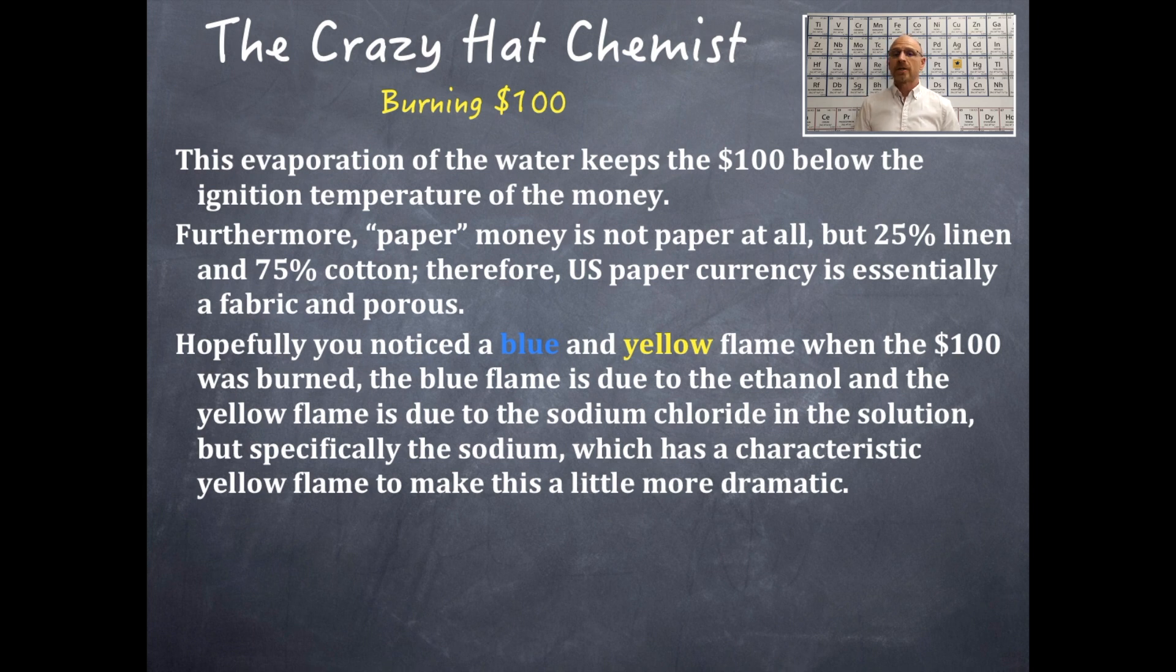Hopefully, you noticed a blue and a yellow colored flame when the $100 bill was burned. The blue flame is due to the burning of the ethanol. And ethanol and methanol and propane all have a characteristic blue flame. But the yellow flame is due to the sodium chloride. And specifically, the sodium itself. So sodium has a characteristic yellow flame that is very, very bright. And that makes this reaction a little bit more dramatic. If you just saw a blue flame, it would be hard to see. That's why I'm wearing the white shirt here today. But that yellow flame was very dramatic. And it was certainly on fire.